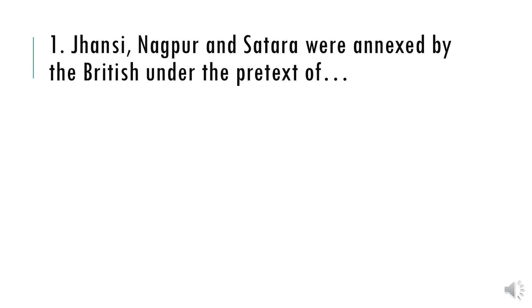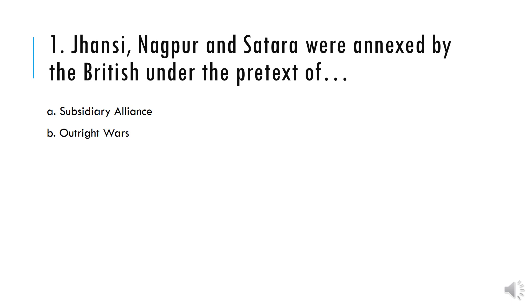First question. Jhansi, Nagpur and Satara were annexed by the British under the pretext of: A) Subsidiary Alliance, B) Outright Wars, C) Doctrine of Lapse, D) Alleged Misrule. And the correct answer is Option C — Doctrine of Lapse.